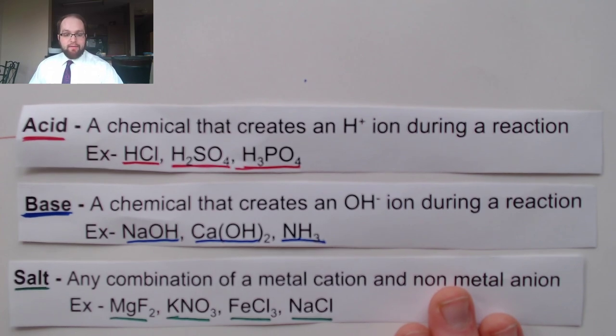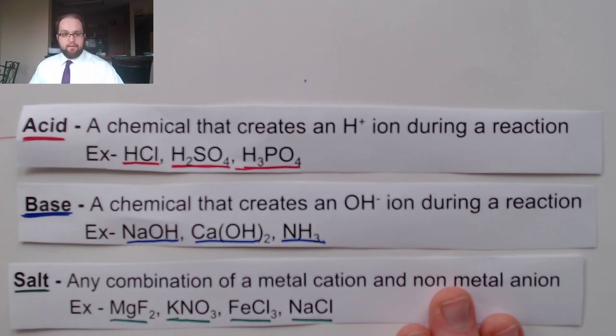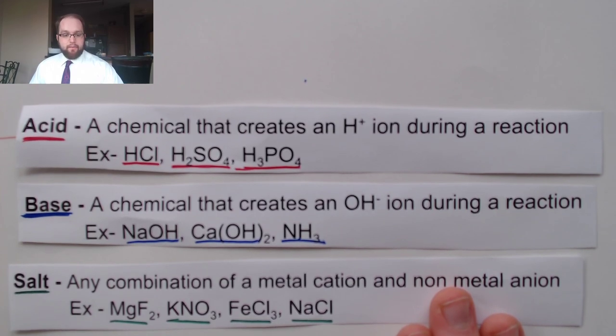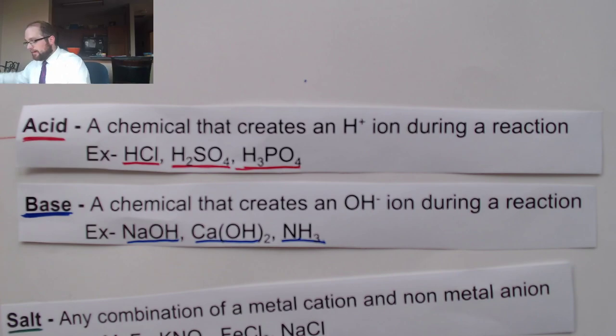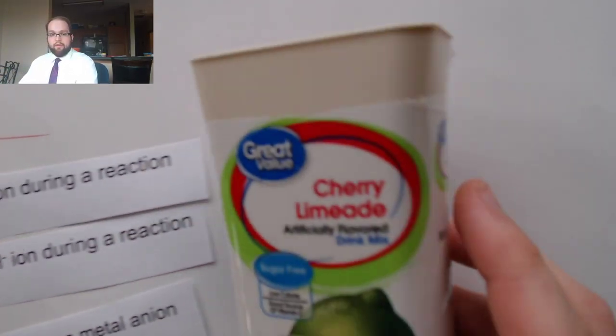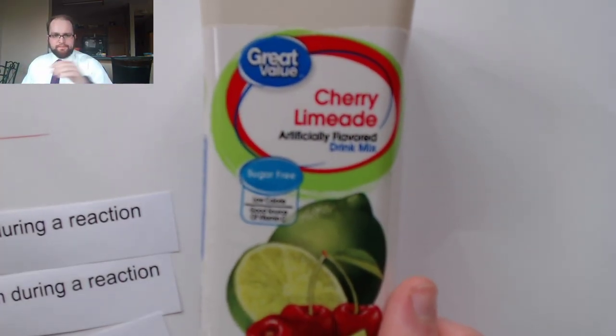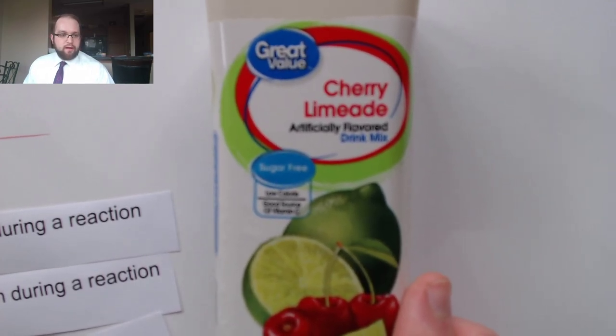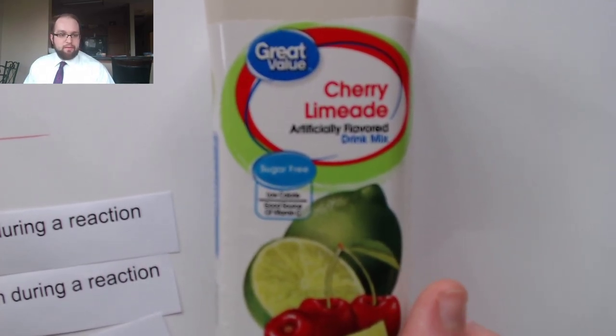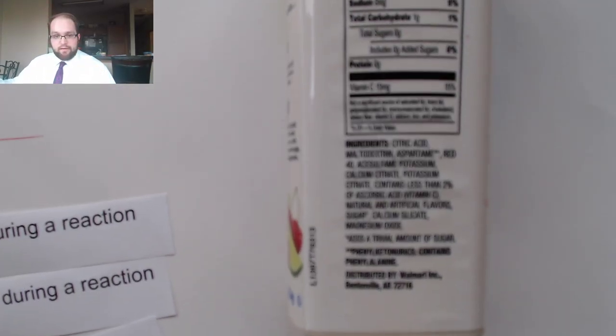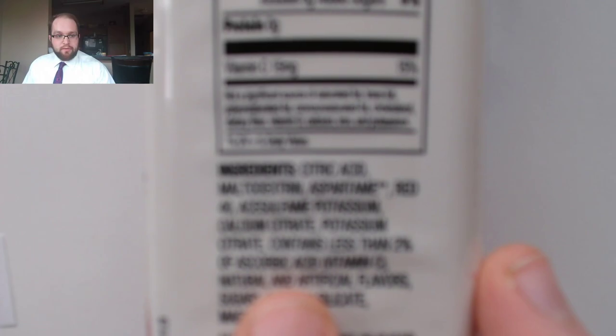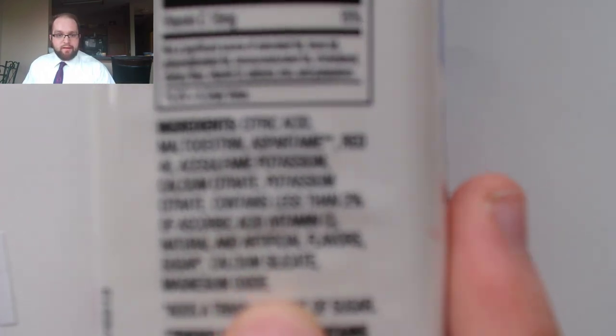You can find a lot of different kinds of acids and bases in different types of samples. For example I can pull up some cherry limeade drink mix. I drink this in order to help stop myself from drinking as much soda. If I look at the ingredients list of these kinds of foods, especially things with like fruity flavors once it decides to focus.